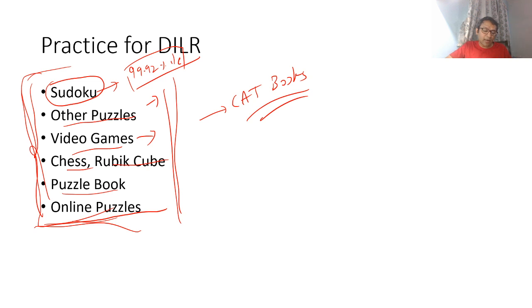Regarding what speed to maintain if targeting five sets all correct - I don't prefer to keep targets like that. First ensure that you are able to get things right, then focus on seeing where you waste time and try to reduce that wastage. If your percentile was 84 and DLR had been decent, you can directly go through various mocks and try to solve the questions.